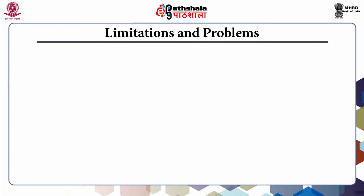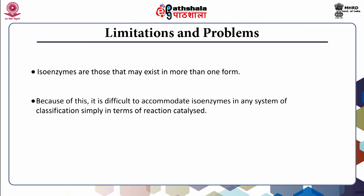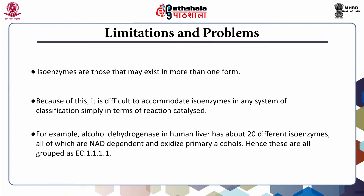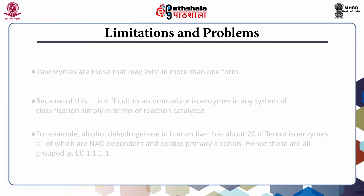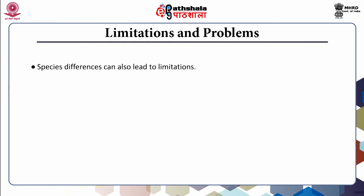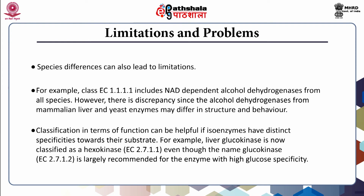Limitations and problems include the issue of isozymes, which may exist in more than one form, making it difficult to accommodate them in any classification system based simply on the reaction catalyzed. For example, alcohol dehydrogenase in human liver has about 20 different isozymes, all of which are NAD-dependent and oxidize primary alcohols; hence, these are all grouped as EC 1.1.1.1. Species differences can also lead to limitations: the class EC 1.1.1.1 includes NAD-dependent alcohol dehydrogenases from all species; however, alcohol dehydrogenases from mammalian liver and yeast may differ in structure and behavior.